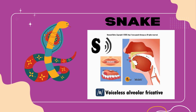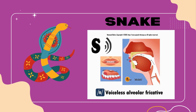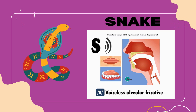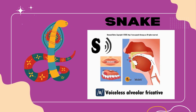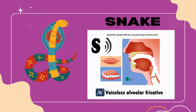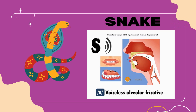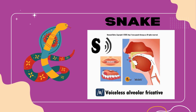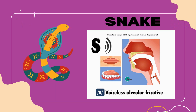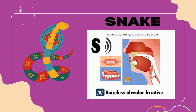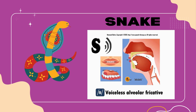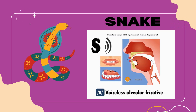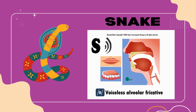Moving on to snake — here we have the letter S, representing the voiceless alveolar fricative sound S. As we say snake, the airflow is partially obstructed at the front of the mouth, creating a hissing sound.